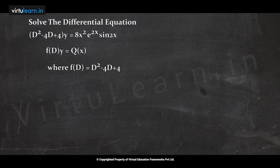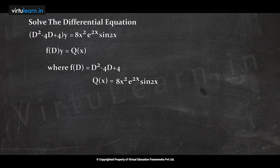Here F(D) = D² - 4D + 4 and Q(x) = 8x²e^(2x)sin(2x). To get the complementary function, consider the auxiliary equation F(m) = 0 — replace capital D by small m and equate to zero.